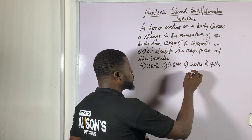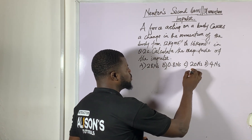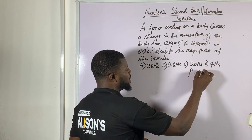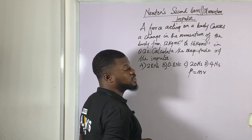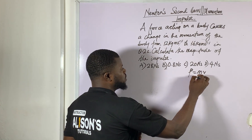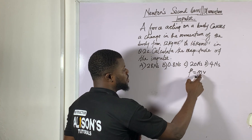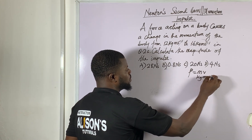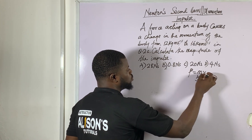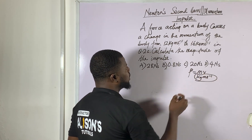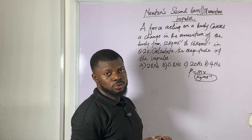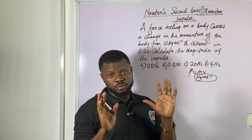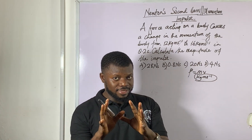You can worry now if you don't know what momentum means. Momentum P is equal to mass times velocity. Mass should be in kilograms, that's the unit for mass. Velocity in meter per second. You see these two join together — so when you see kilogram meter per second, just know that is for momentum.